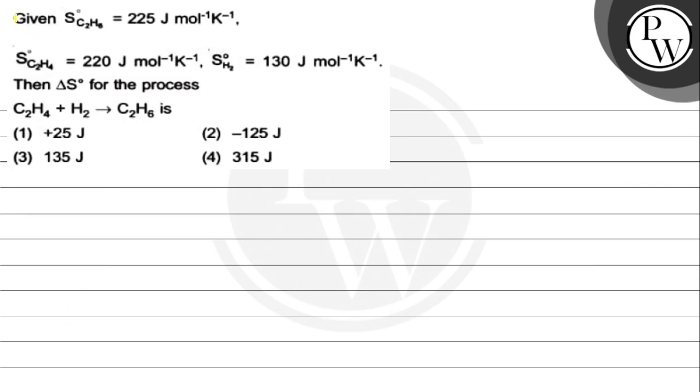Hello, let's see. The question says given S° C₂H₆ is 225 joule per Kelvin per mole, S° C₂H₄ is 220 joule per Kelvin per mole, S° H₂ is 130 joule per Kelvin per mole.